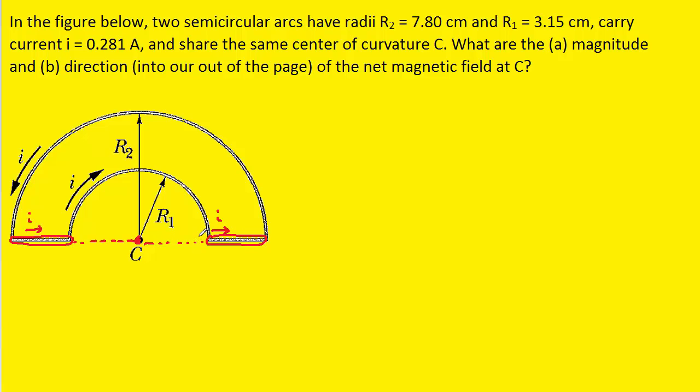So, what we need to consider are the two circular arcs. And it turns out that there is a formula that gives the magnetic field produced at the center of curvature by circular arcs. So, let's take a look at that equation.